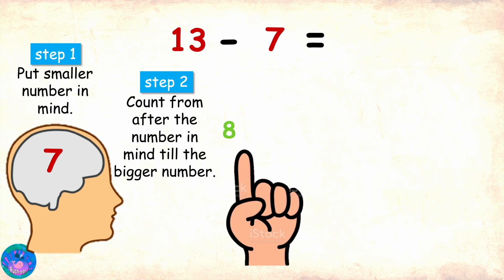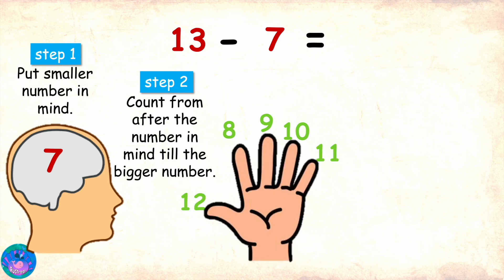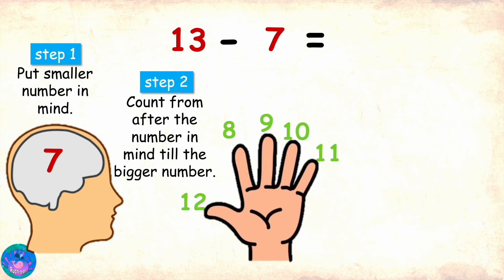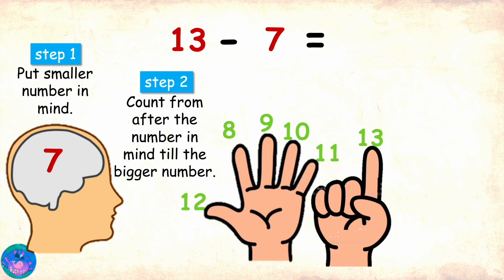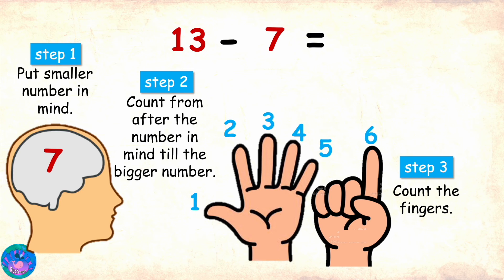8, 9, 10, 11, 12—I will have to use my second hand as well—13. Step 3, count the fingers raised: 1, 2, 3, 4, 5, and 6. So 13 minus 7 should equal 6. Excellent Sam! But miss, we have just 10 fingers.